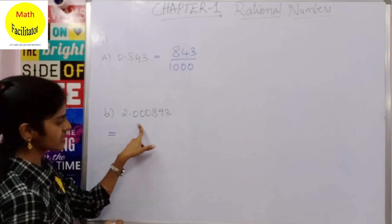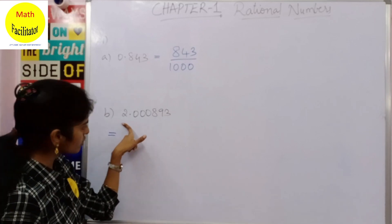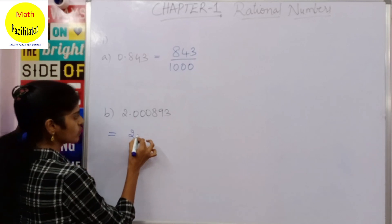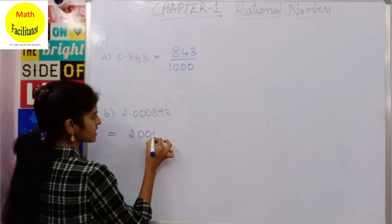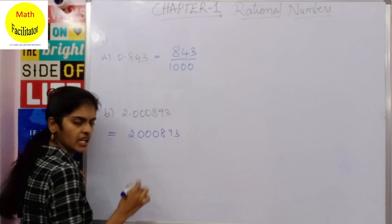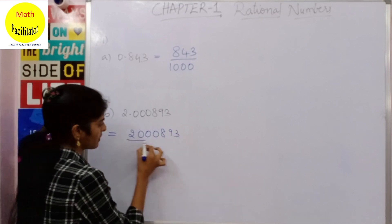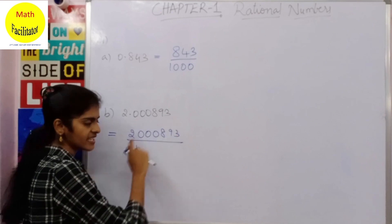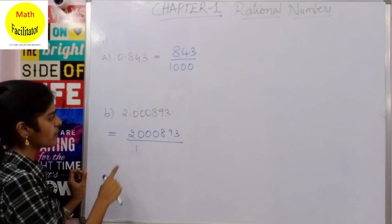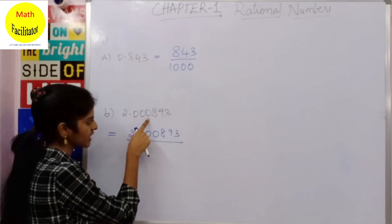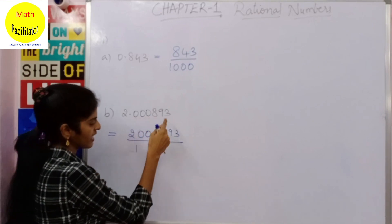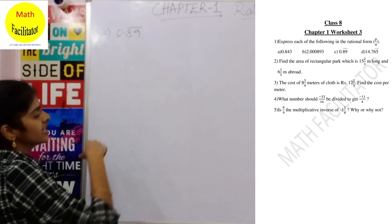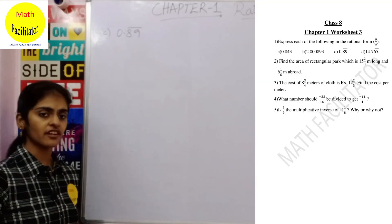The second question is also the same — convert into rational form. Write the number as it is: 2000893, divided by 1 along with as many zeros as the decimal places. How many decimal places are there? 1, 2, 3, 4, 5, 6 — so you write 6 zeros.